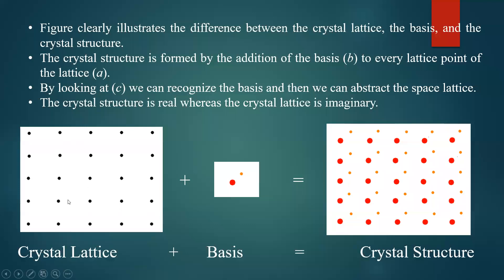Crystal lattice is an imaginary group of geometrical points arranged in a regular pattern in space. The points on the crystal lattice are called lattice points. Basis is the crystal structural unit — the fundamental building block of the crystal — repetition of which in three dimensions gives the crystal structure. Crystal structure is formed by replacing each lattice point with the basis. Finally: crystal lattice + basis = crystal structure.